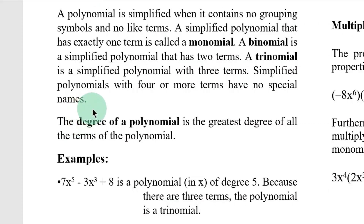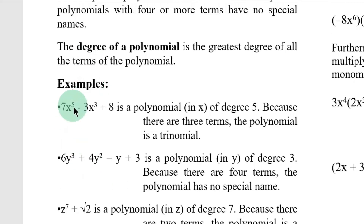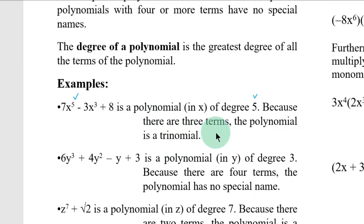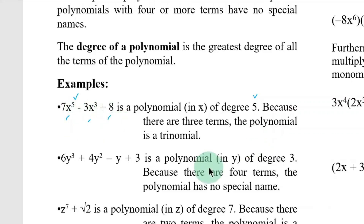The degree of a polynomial is the greatest degree of all the terms of the polynomial. For example, 7x to the 5th minus 3x cubed plus 8 is a polynomial in x of degree 5. Because there are three terms, the polynomial is called a trinomial — one, two, three terms, trinomial.